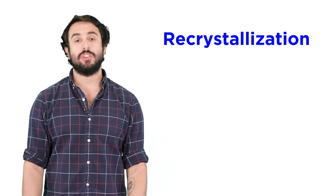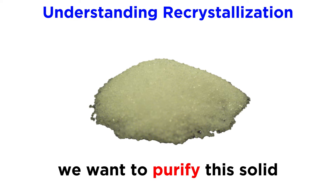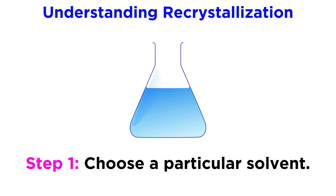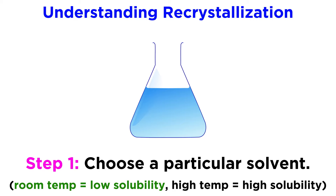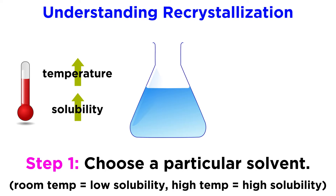There is a solution to this problem, and it is called recrystallization. The way this works is that we will choose a very particular solvent in which to dissolve this solid. The solid must have a very low solubility in this solvent at room temperature, but a very high solubility in this solvent at very high temperatures, which makes sense given that solubilities will tend to increase as temperature increases, given the entropic favorability of dissolution.